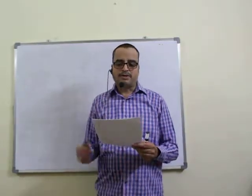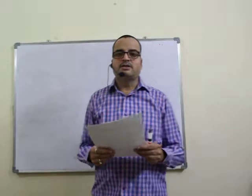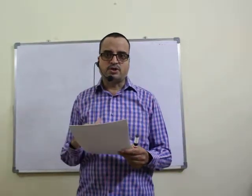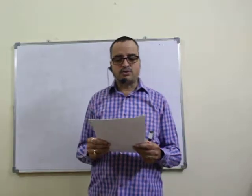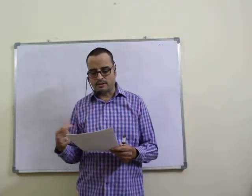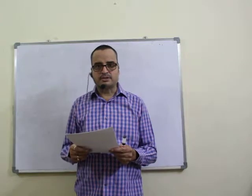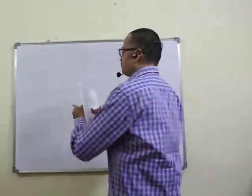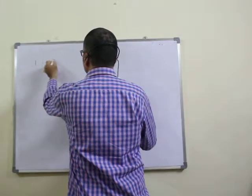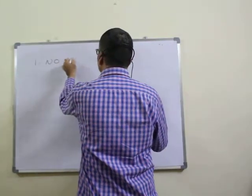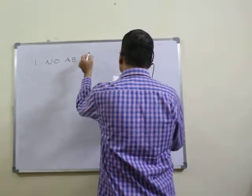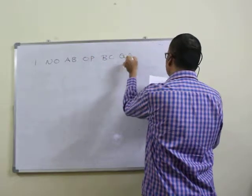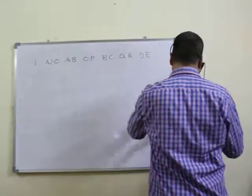Hi friends, let us discuss CGL model number five. Question one is based on a series where a letter or letters are missing and you have to find them out. The first question is given as: N O, A B O P, B C Q R, D...